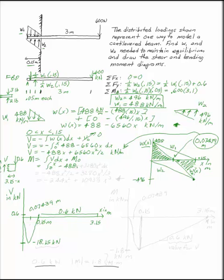Negative 488x plus 3280x squared, which is what 6560 divided by 2 is. And I get negative 488x squared over 2 plus 3280x cubed over 3, or minus 244x squared plus 1,093 and a third x cubed. That's my equation for M.